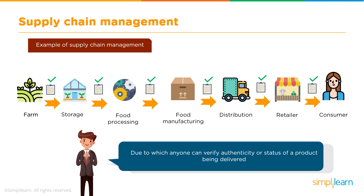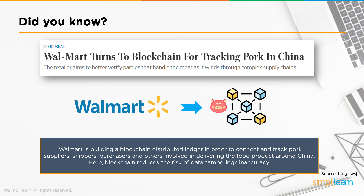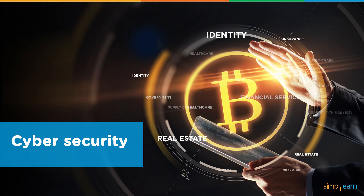The advantage of this is that anyone can verify the authenticity or the status of a product being delivered. For a real-life example, look no further than Walmart. Walmart is building a blockchain distributed ledger to connect and track pork suppliers, shippers, purchases, and other units involved in its supply chain delivering food products across China. This is done to reduce the risk of data tampering or inaccuracy.